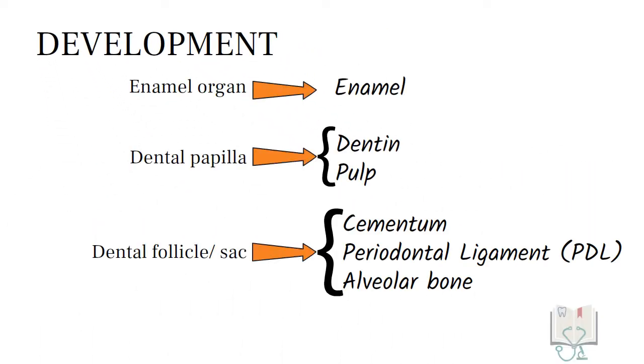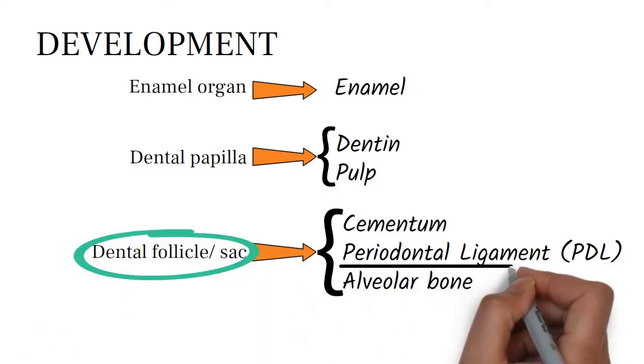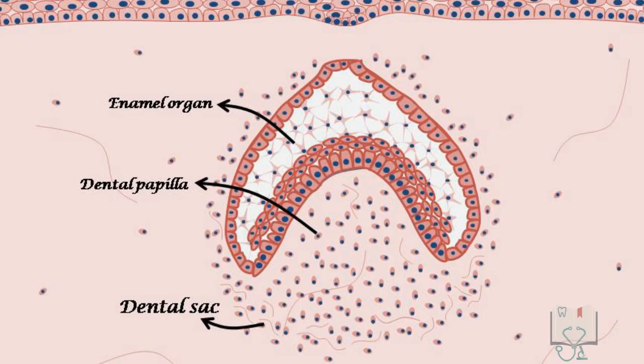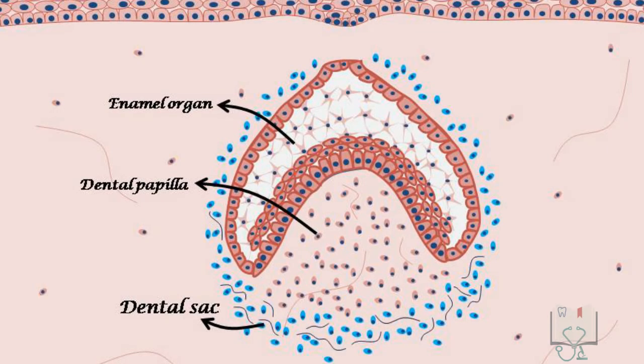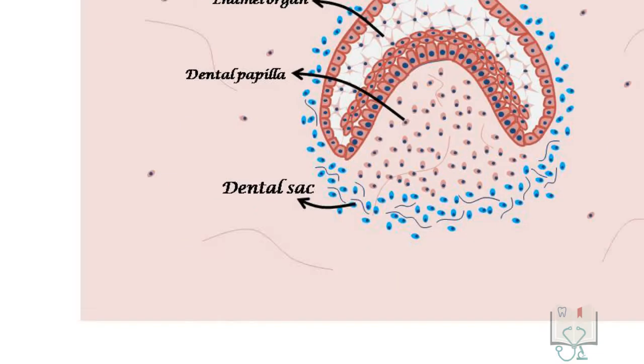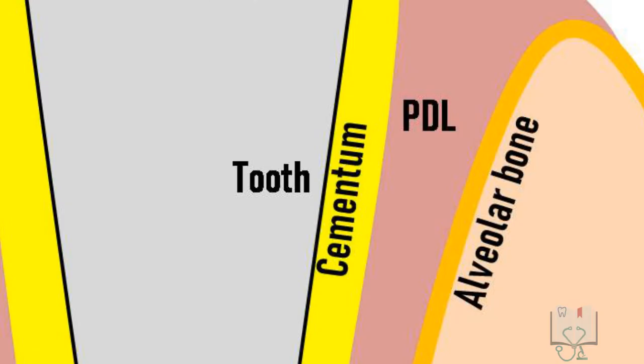Their development. During tooth development, the dental sac or dental follicle gives rise to the periodontal ligament. Cells of the dental sac differentiate into fibroblasts and start forming collagen fibers. As the tooth continues developing and erupting, these fibers elongate towards each other, meet in the center and form a bundle.